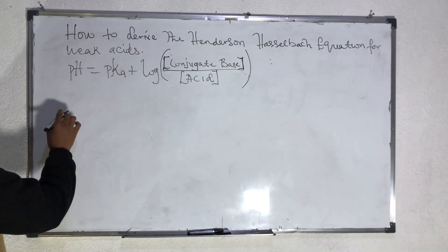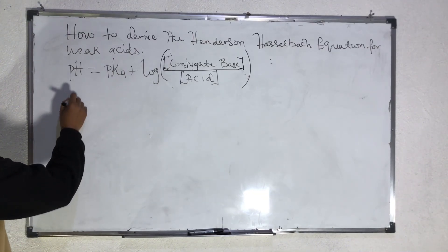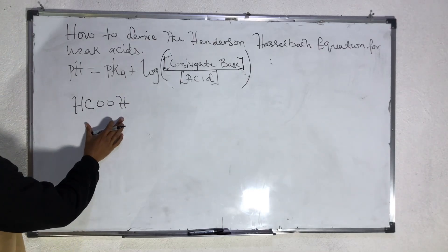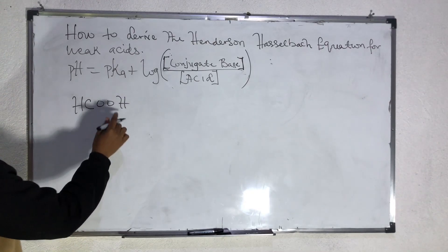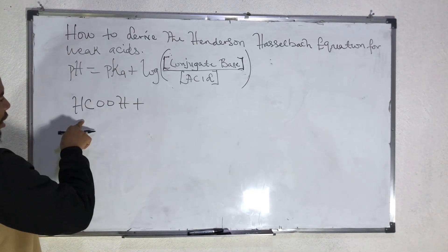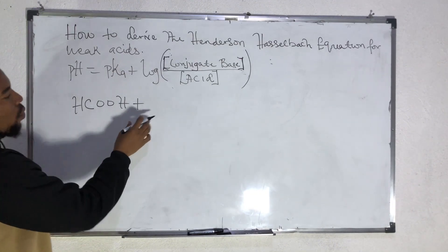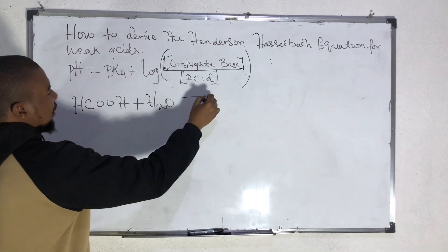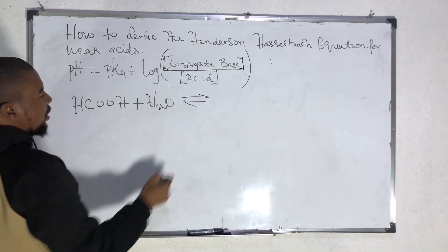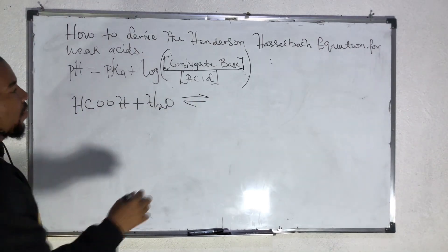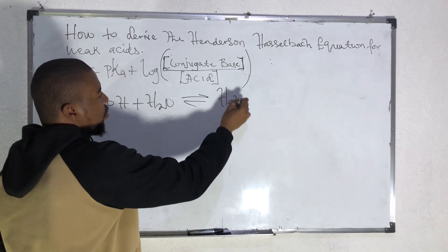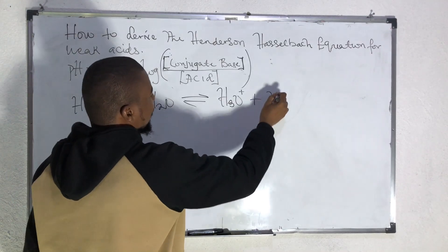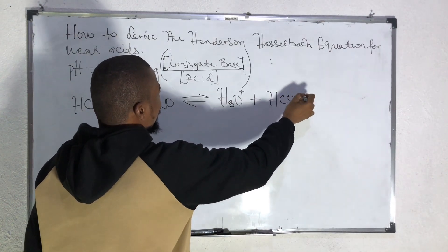Suppose you have formic acid, which is HCOOH. This is a weak acid. If you add water to it, which is H2O, they react to give you H3O+ plus HCOO-.